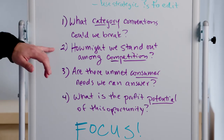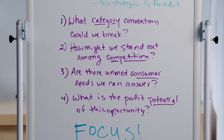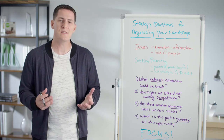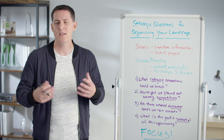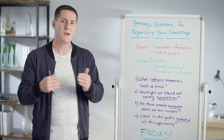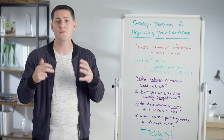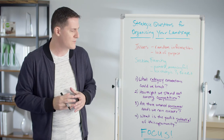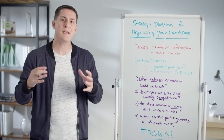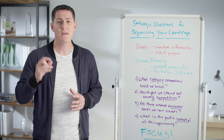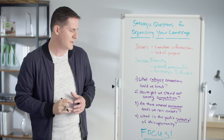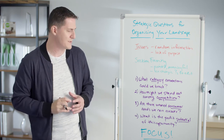Another example, number two on the list: how might we stand out amongst competition? It's very common to have a section on competition in a landscape assessment, but instead of just listing information on competitors or doing comparison grids, think about a question like this. How might we actually stand out in the competitive set? Now you have a different kind of takeaway and need to edit to different kinds of information that make it a little more pointed.